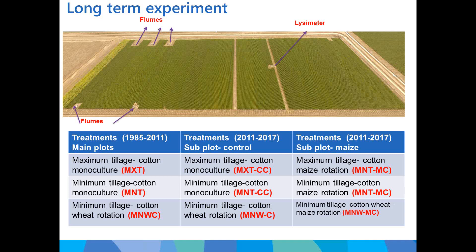The experiment was conducted within a long-term trial that includes three historical cropping systems implemented in 1985: maximum tillage cotton monoculture, minimum tillage cotton monoculture, and minimum tillage cotton-wheat rotation. In 2011, these were subdivided into a split-plot design introducing maize rotation, creating six treatments across four replications. Two flumes in the head ditch and six flumes in the tail drain monitored runoff, and a CSIRO-managed lysimeter was also present.